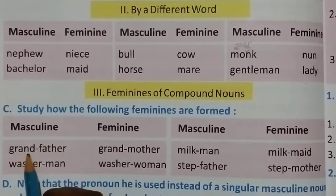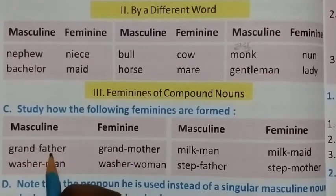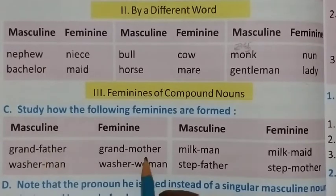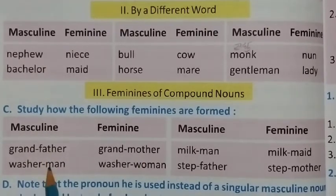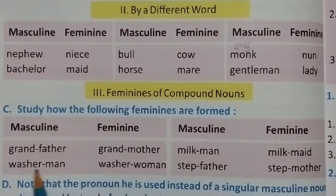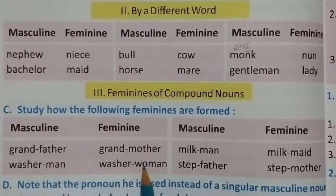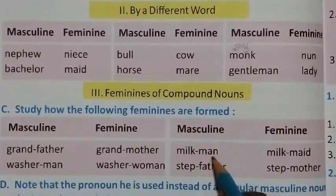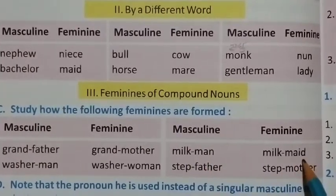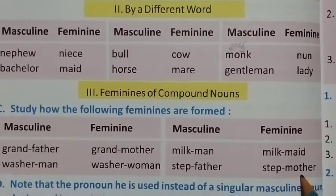In compound nouns, the first words may stay the same while one part changes. For example: father becomes mother, washerman becomes washerwoman — here 'washer' stays the same and 'man' changes to 'woman'. Milkman becomes milkmaid, and stepfather becomes stepmother.